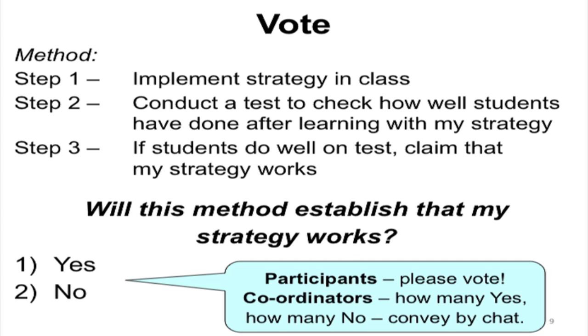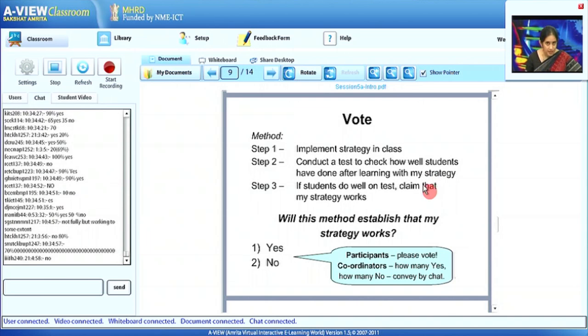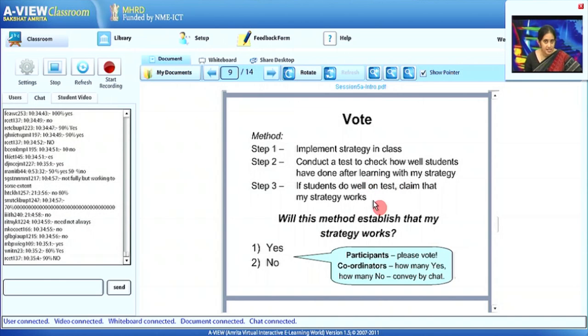Please raise hands and vote locally. Coordinators, convey the percentage of yes and no responses in your class. The question is: is implementing a strategy and conducting a post-test sufficient to establish that the strategy is actually working? The responses are quite mixed — some centers report 100% yes, others 100% no, some a 50-50 split, others 70-30. This is a challenging question and reflects what we would tend to do at the beginning. Before discussing the answer, let us see what a referee would do.